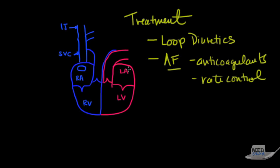You want to keep the rate down, unlike in aortic insufficiency. And certainly if there are clots here, you don't want those clots to go through and embolize up to the brain. So anticoagulation will be key.